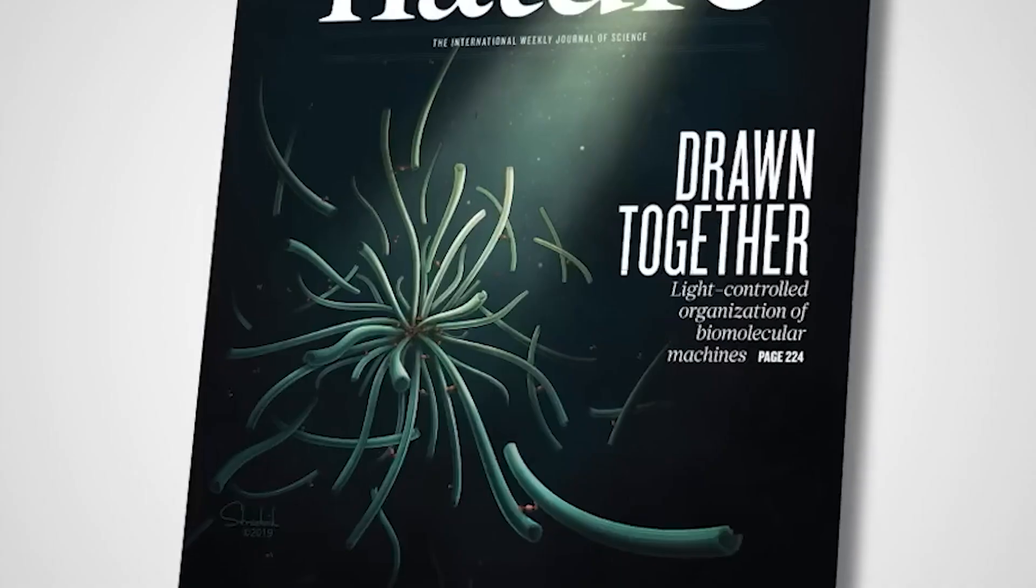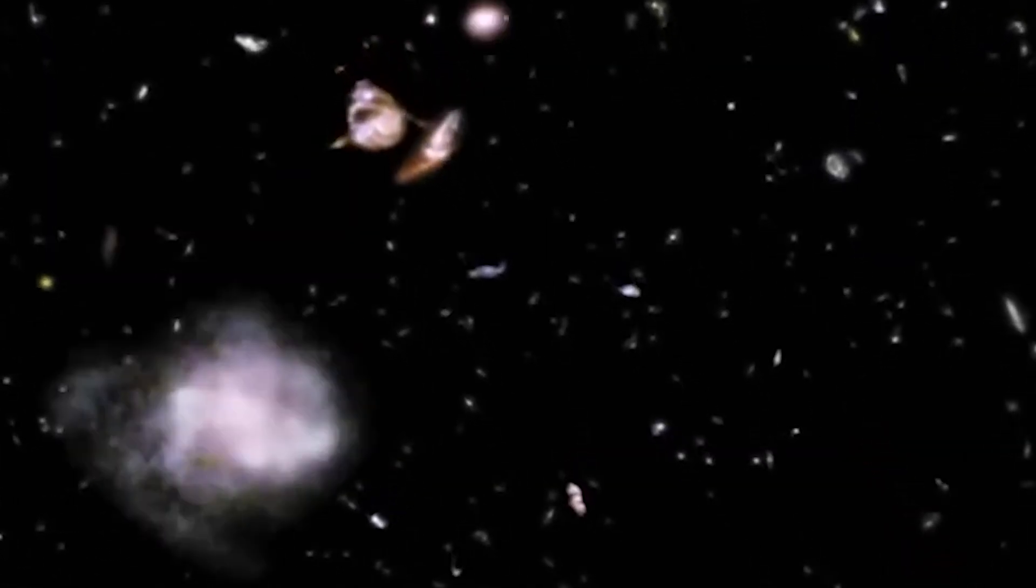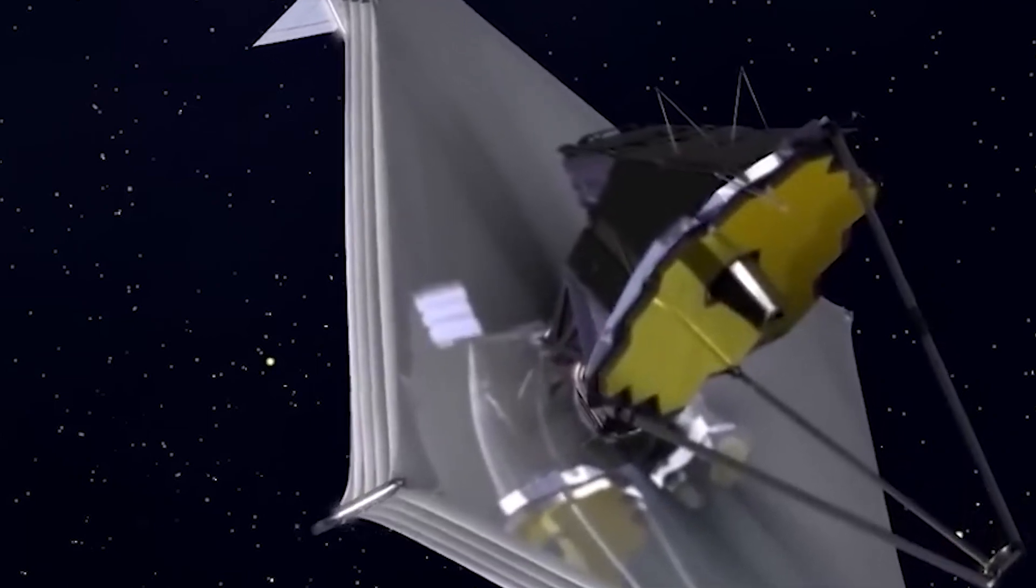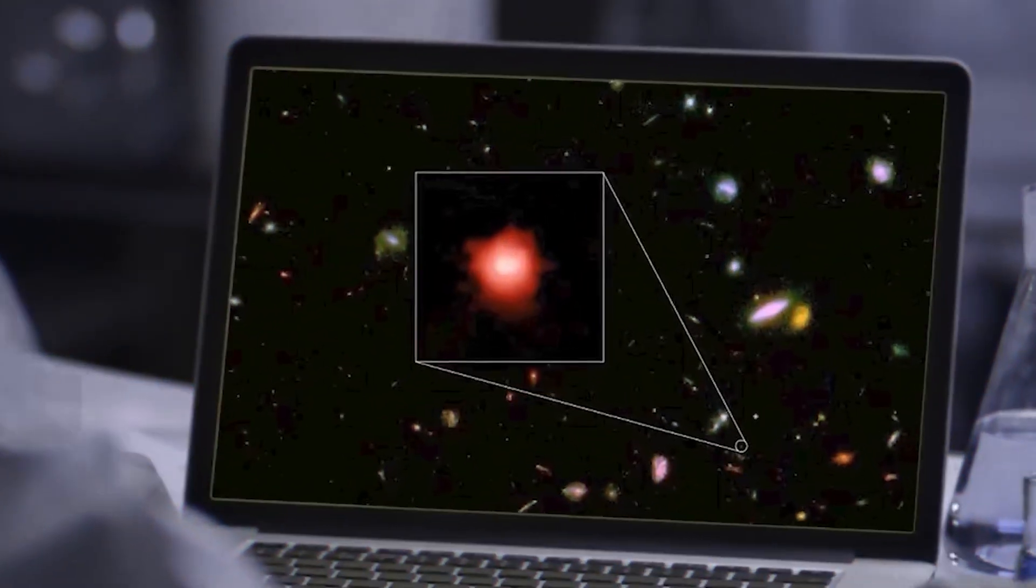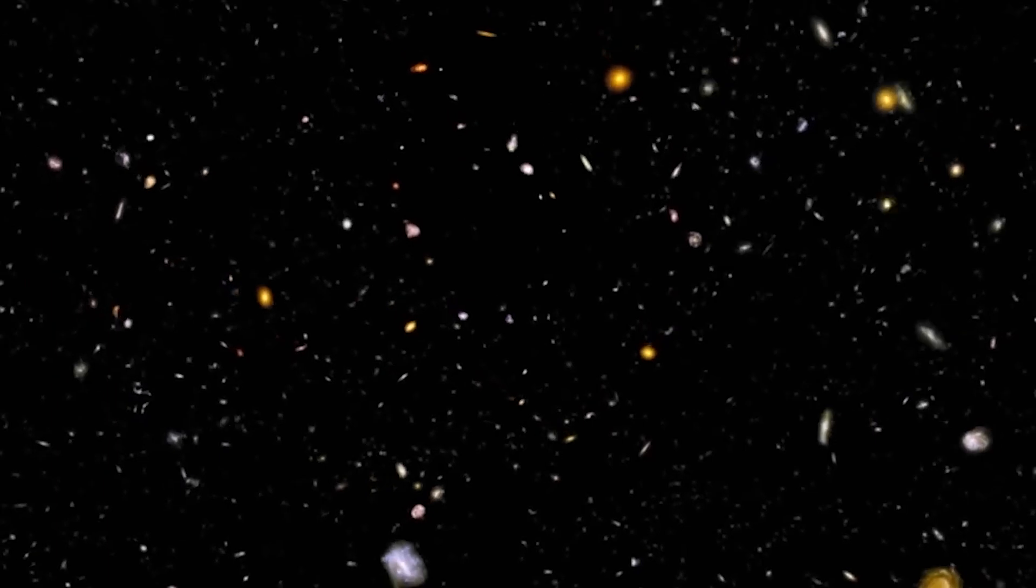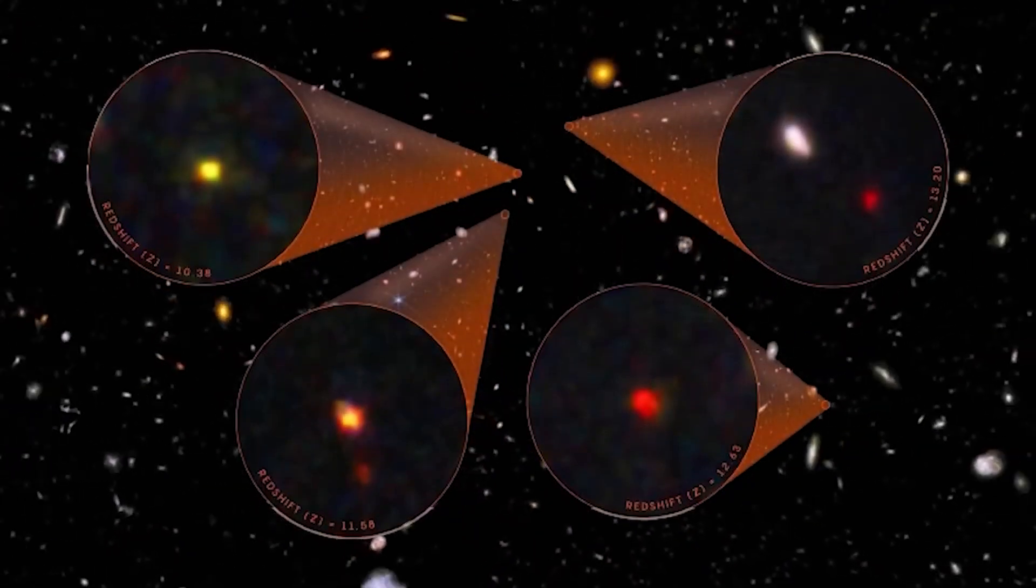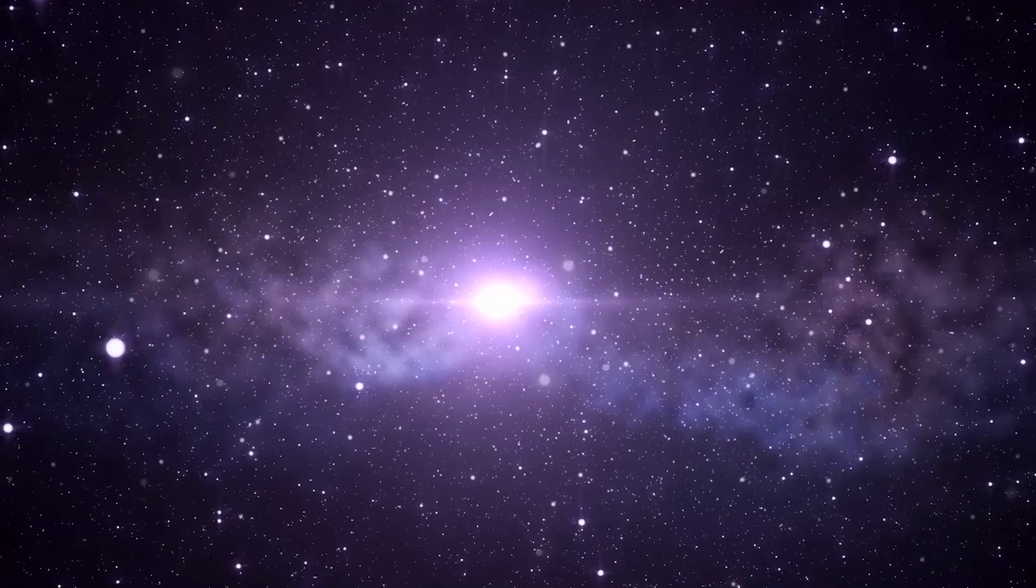As time went on, matter and energy continued to clump together as a result of gravitational attraction, creating formations like galaxies, stars, and planets. Although galaxies and galaxy clusters formed large-scale formations that were divided by huge cosmic voids, the distribution of matter in the universe was not uniform. The Big Bang theory also explains the observed redshift in light emitted by far-off galaxies, which is evidence for the universe's continuing expansion. As the universe expands, light from these galaxies' wavelengths stretch and cause a shift towards the red end of the electromagnetic spectrum.